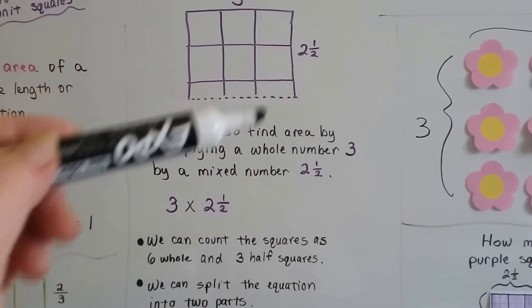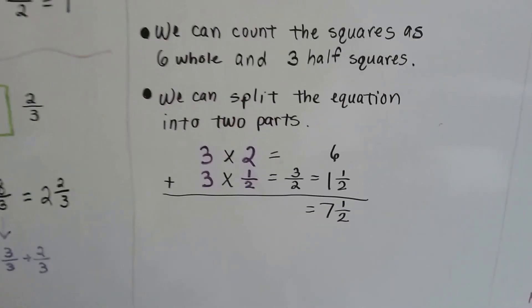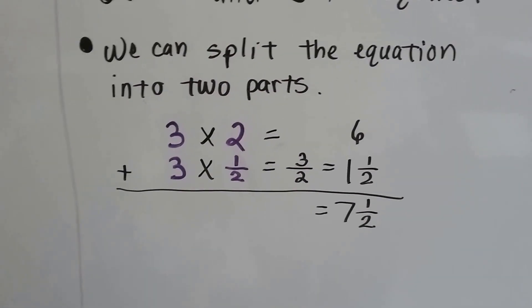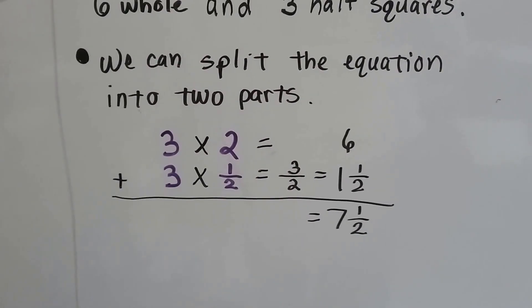1, 2, 3 times a half. 3 times a half is 3 halves. That simplifies to 1 and a half. That gives us 7 and a half squares.